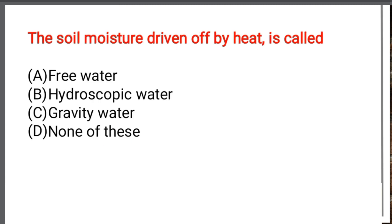Next question: The soil moisture driven off by heat is called — Option A: Free water. Option B: Hygroscopic water. Option C: Gravity water. Option D: None of the above. The correct answer is Option B: Hygroscopic water. We will see more in the next video. Thank you.